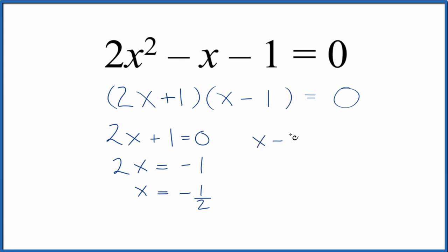Over here, we could say x minus 1 equals 0. We add 1 to both sides, we get x equals 1.